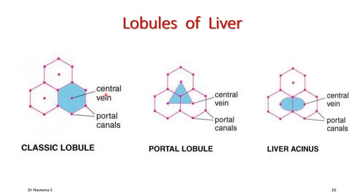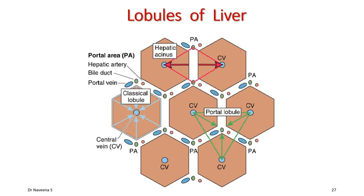In the classical lobule, the central vein is in the center with portal triads at the periphery. In the portal lobule, central veins are placed peripherally and the portal triad is in the center. In the liver acinus, central veins are peripheral and the distributing artery is in the center. Blood flow in the classical lobule is centrifugal, whereas in the portal lobule and hepatic acinus it is centripetal. Bile flow in the classical lobule is centripetal, whereas in the portal lobule it is centrifugal.